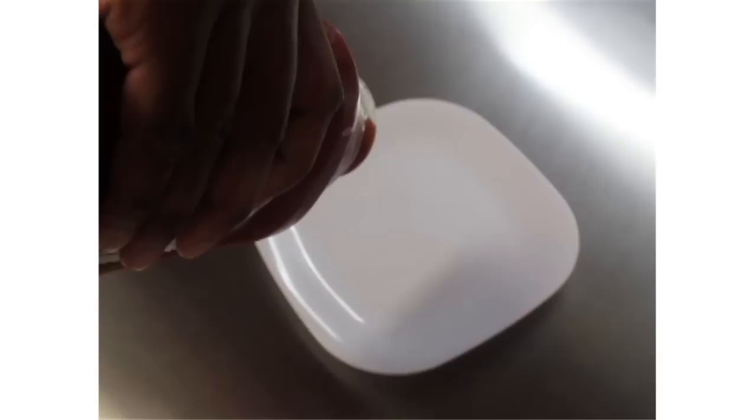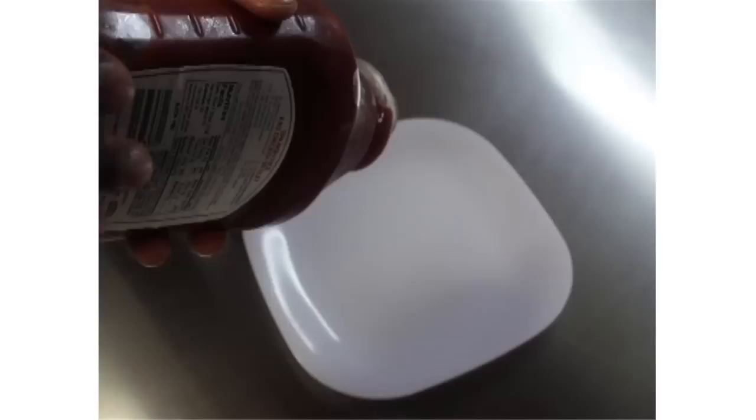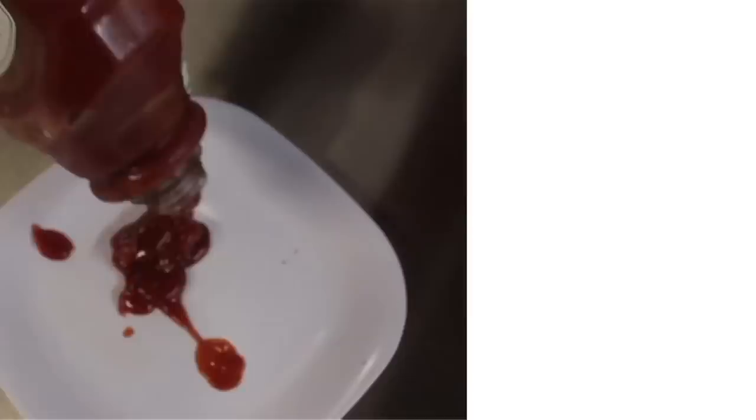Notice here how the ketchup is able to retain its form without spreading out unlike other common fluids. Here, the ketchup is being tipped over without any ketchup coming out. But when we add a force, such as hitting it, the viscosity of ketchup decreases, allowing it to slip out of the bottle and onto your burger.